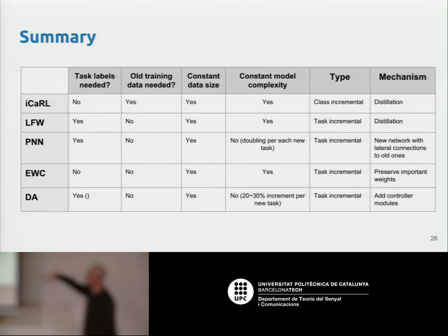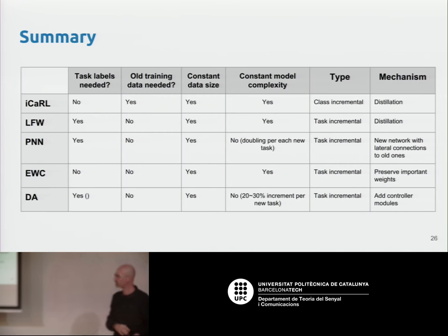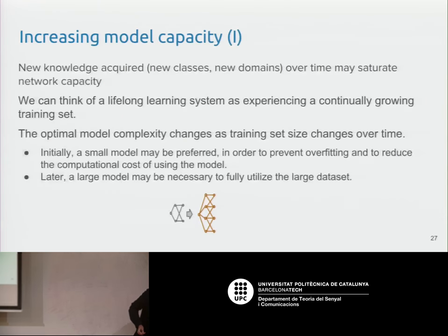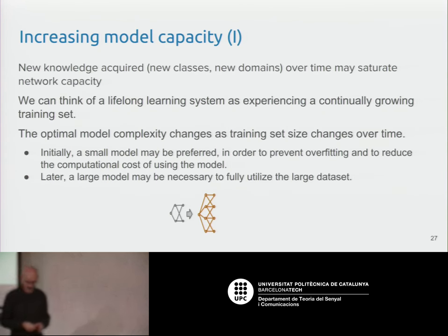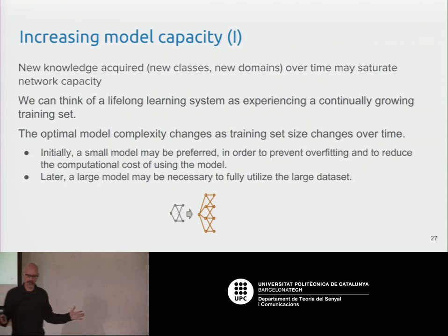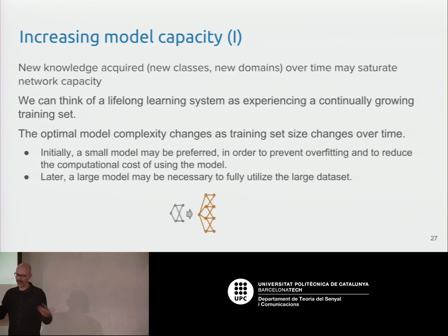There is a summary of the different properties of these approaches — whether they need previous training data, whether model complexity increases, and whether storage increases over time. Another challenge in lifelong learning is that over time the complexity of the system may not be enough as we keep receiving new data and the problem grows more complex, so the originally designed network may no longer be sufficient.